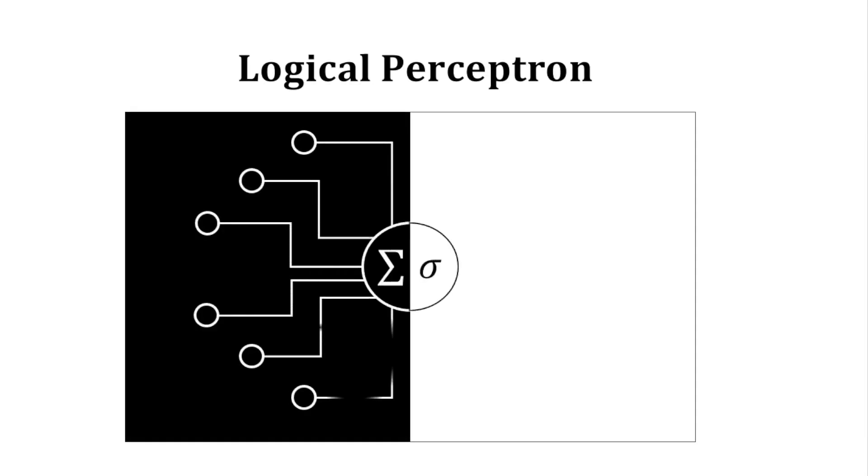Perceptrons are well known to be a statistical model working with an optimization mechanism, but they also have a lot in common with logical gates with a different side on it. In some configurations, perceptrons can act like an OR gate, an AND gate, and so on.